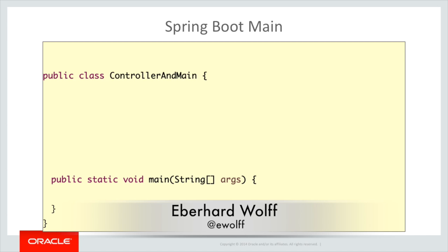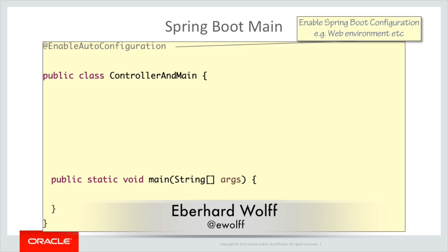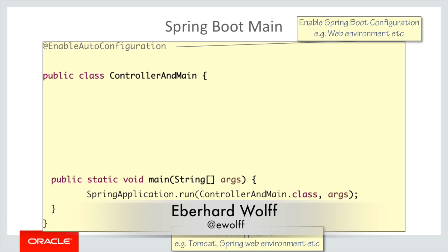To answer those challenges, I think Spring Boot is a good tool. Let's take a look at a very simple Spring Boot application. To actually make it a Spring Boot application, we need to annotate it using @EnableAutoConfiguration. That sets up a Spring Boot configuration including a web environment, which would include an embedded web server like Tomcat, and all the other things that Spring needs to set up such an environment. Then we need to start this class once the application starts, which would start Tomcat, the web environment, and all these kinds of things.